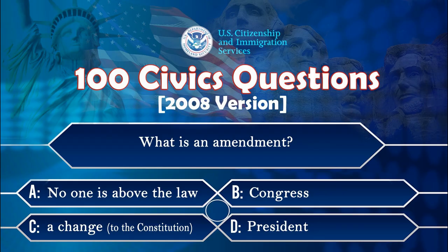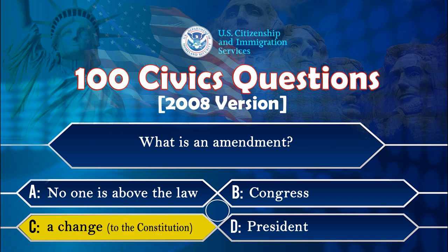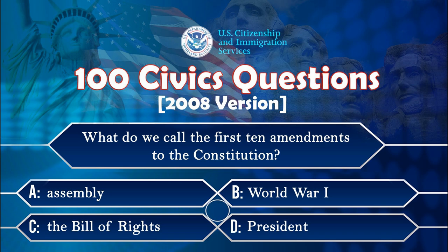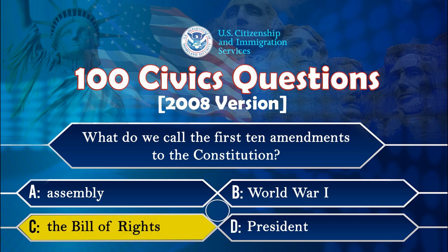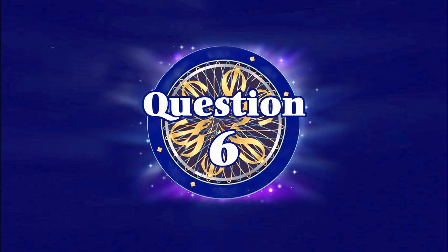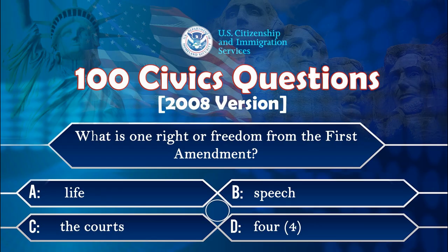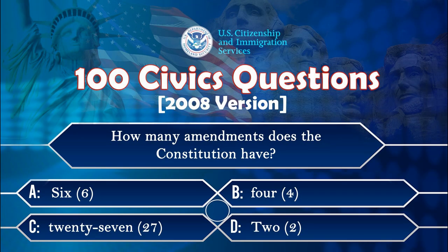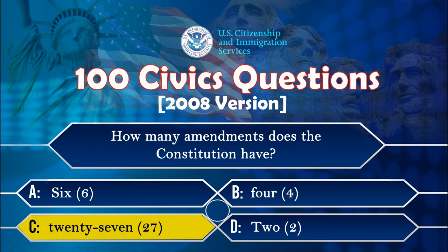What is an amendment? A change to the Constitution. What do we call the first ten amendments to the Constitution? The Bill of Rights. What is one right or freedom from the First Amendment? Speech. How many amendments does the Constitution have? Twenty-seven.